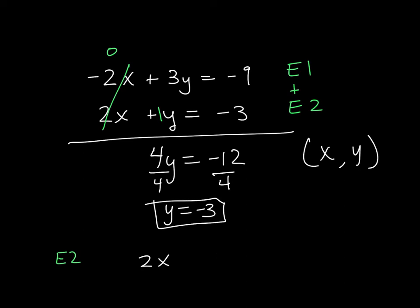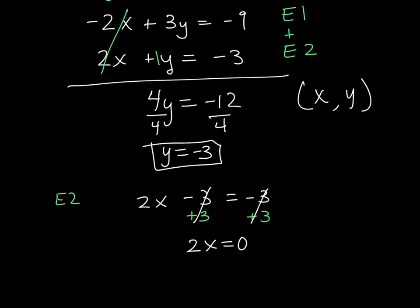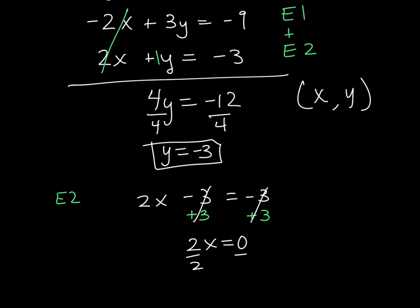So 2x minus 3 is equal to negative 3. And again, we have this really weird thing that happens, but it doesn't always happen, but sometimes it does. Those are both 0. So it's just 2x is equal to 0. Divide both sides by 2, and x is equal to 0.